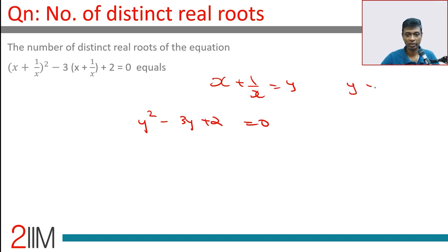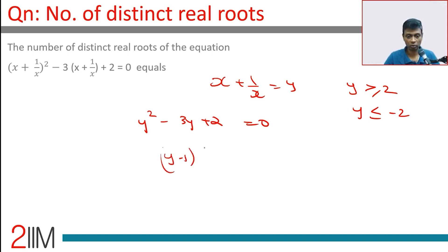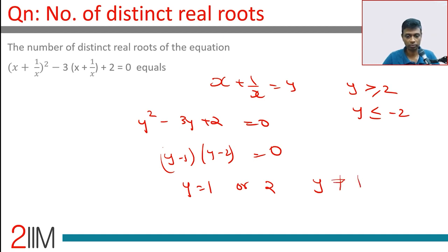Remember, for anything of the form x + 1/x, y is greater than or equal to 2 or y is less than or equal to -2. Factoring gives (y - 1)(y - 2) = 0, so y = 1 or y = 2. Since y cannot be 1, as x + 1/x cannot equal 1, y must be 2.